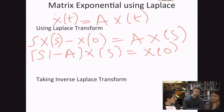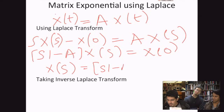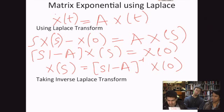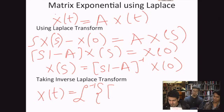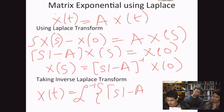So, you can take the inverse Laplace transform to convert this. Oh, wait. First, you bring the sI minus A to the other side. (sI minus A) inverse into x(0). Now, you can take the inverse Laplace transform to convert this to x(t), which is equal to Laplace inverse of (sI minus A) inverse into x(0).